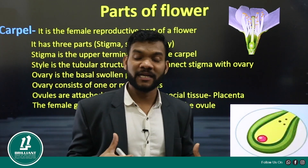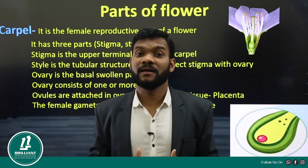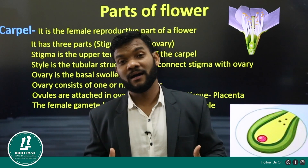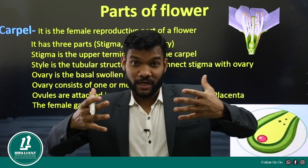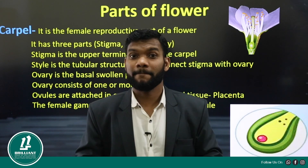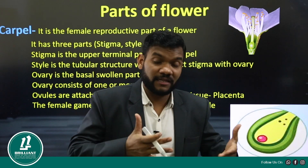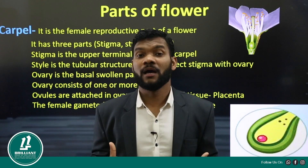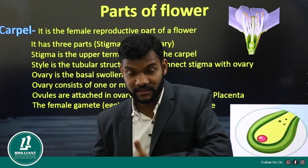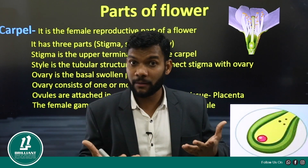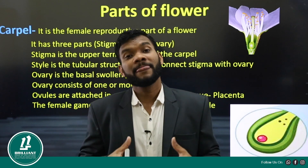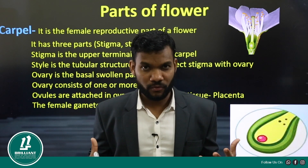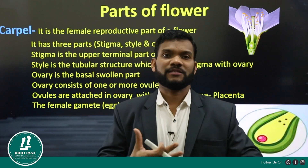So dear students, today we have discussed the different parts of the flower — especially the essential parts and the non-essential parts. Calyx and corolla are the non-essential parts, and stamen and carpel are the essential parts. Thank you, thanks a lot.